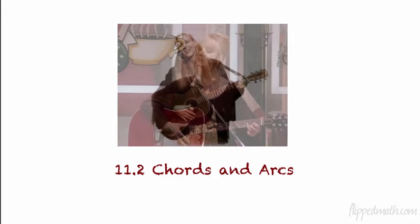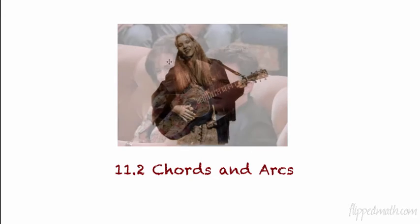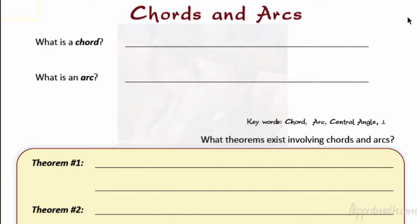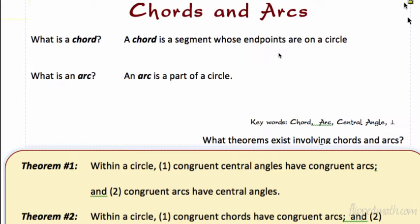I'm learning about chords and arcs today. What exactly is a chord? A chord is a segment whose endpoints are on a circle. And an arc is just part of a circle. We need to know both of these: chord and arc.